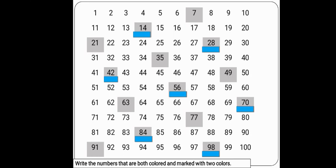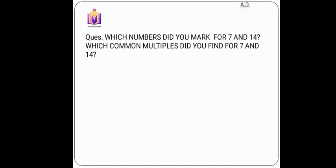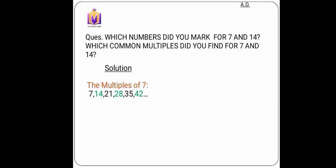Common means the numbers that appear in both tables. For example, 14 is a common multiple of 7 and 14 because it comes in the table of 7 as well as 14. Just keep in mind: multiples are all the numbers that come in a particular table. So the multiples of 7 are 7, 14, 21, 28, 35, and 42.